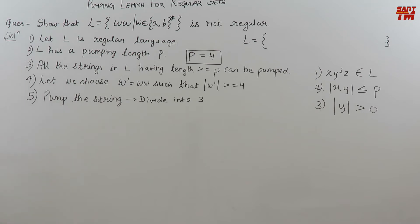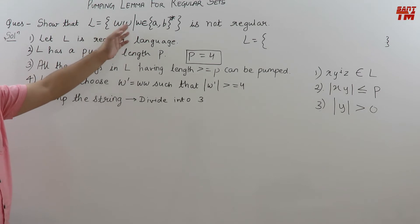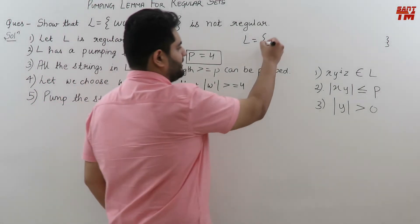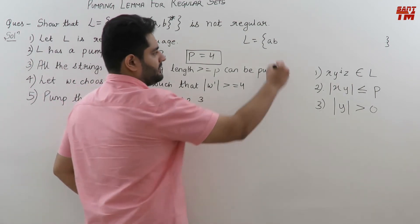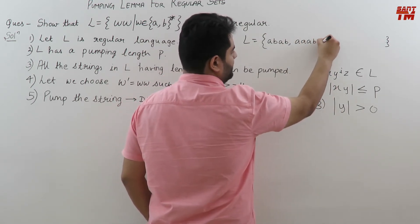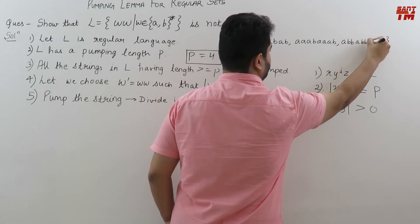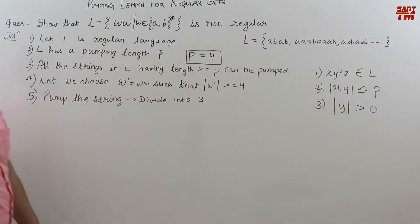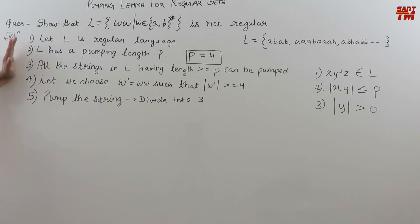Consider this next example. The language is WW, where each W belongs to the closure set of A and B. That means W is any combination of A and B such that the string should be of the form WW — after one W, the W repeats itself. So if I choose W as AB, the string should be ABAB. If I choose AAAAB, the string should be AAAABAAAAB. If I choose ABB, the string should be ABBABB, and so on. These kinds of strings continue. To prove it to be not regular using pumping lemma, we will assume it to be a regular language.